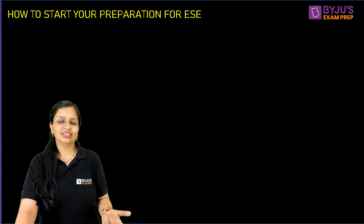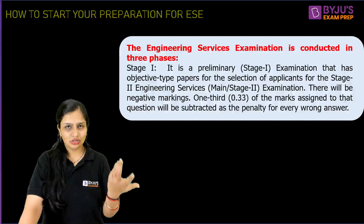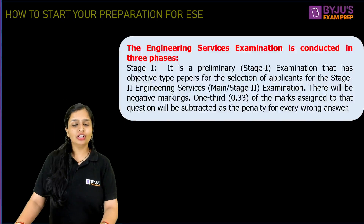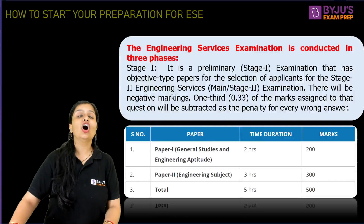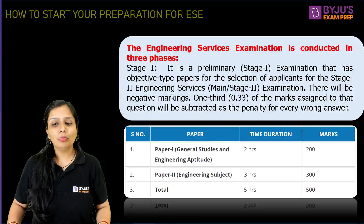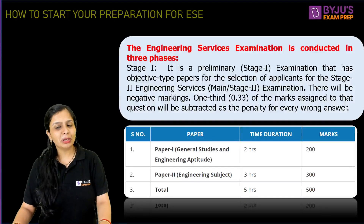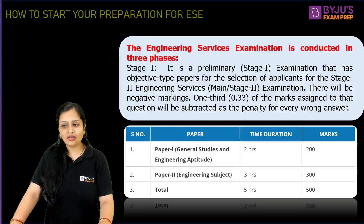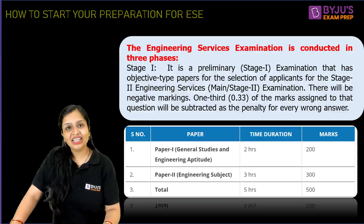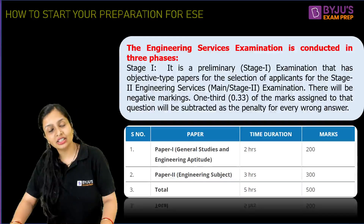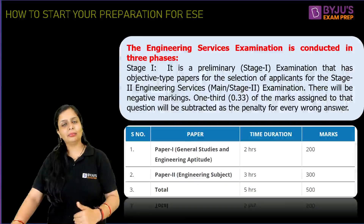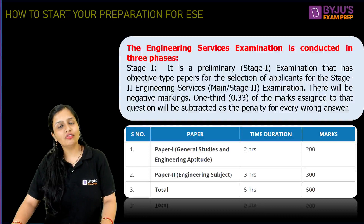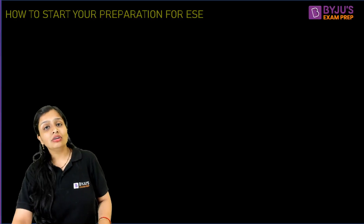First, you should know the type and pattern of the examination. At the preliminary stage, Stage One, you will have objective type papers with a negative marking of 0.33. Paper One is General Studies and Engineering Aptitude covering 10 topics, with a duration of two hours and 200 marks. Paper Two is the Engineering Discipline paper, with three hours duration and 300 marks — making a total of five hours and 500 marks.